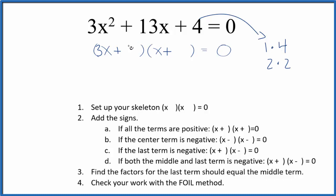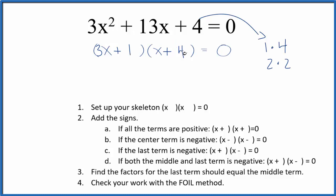If I put 1 here and 4 here, I can see that 3x times 4 is 12x, and 1 times x is 1x — that's 12x plus 1x, which is 13x. So the first combination actually worked. If it didn't, I would try 2 and 2, or put the 4 here and the 1 here. One of those combinations will work.